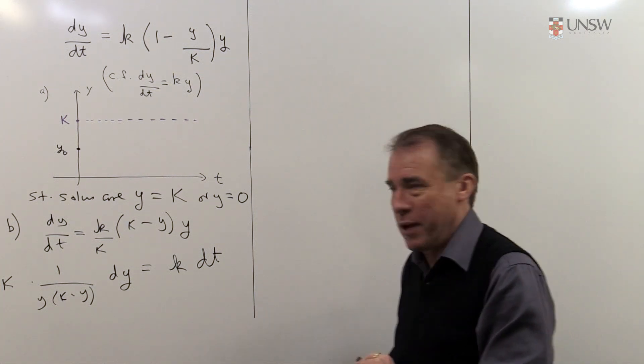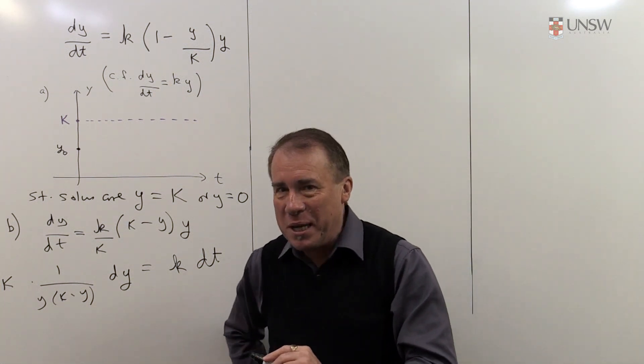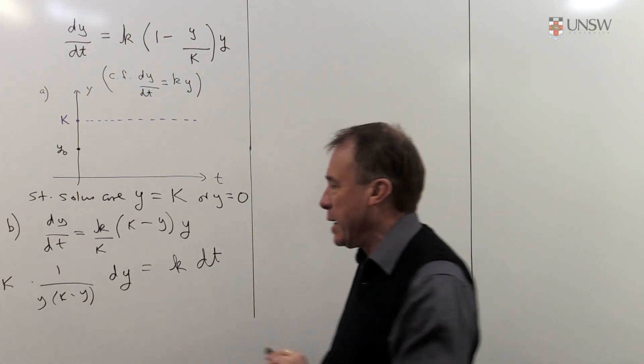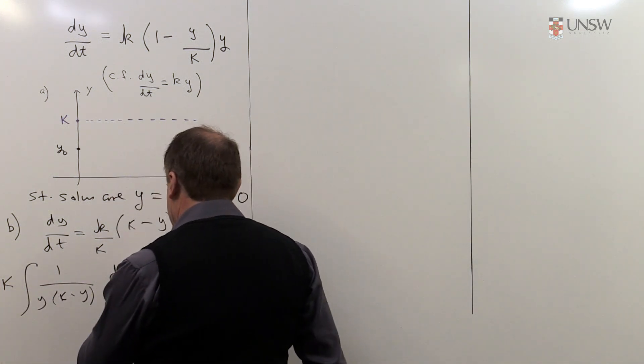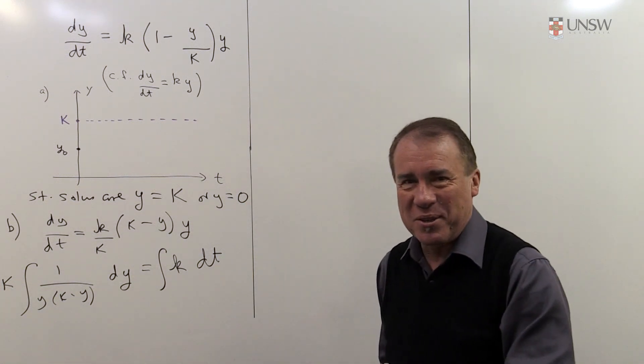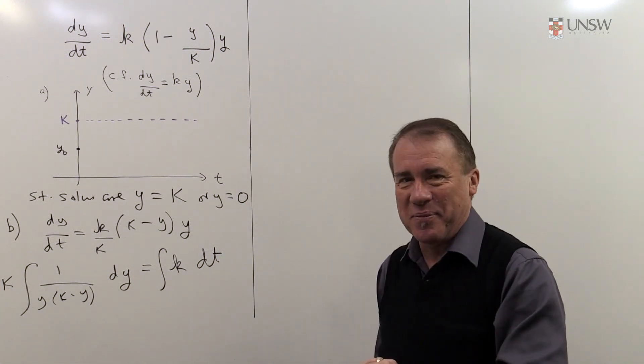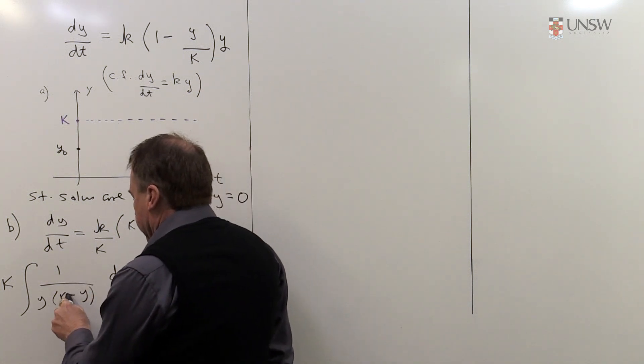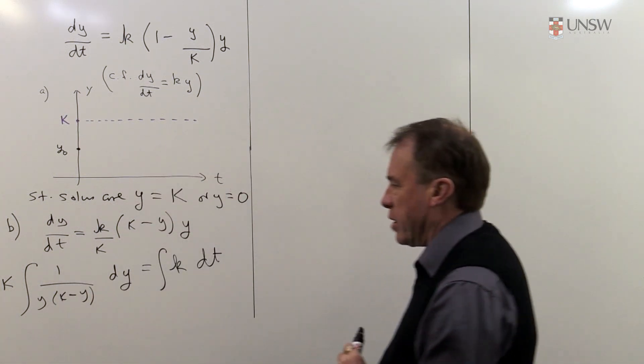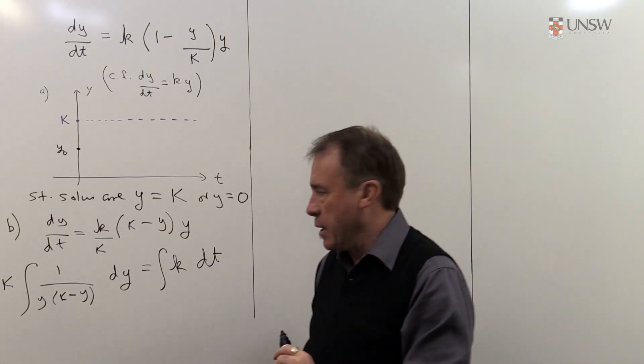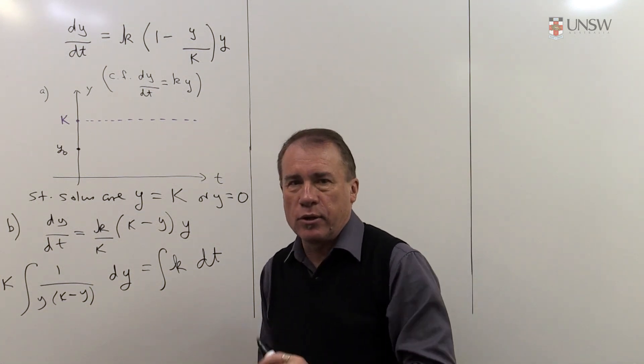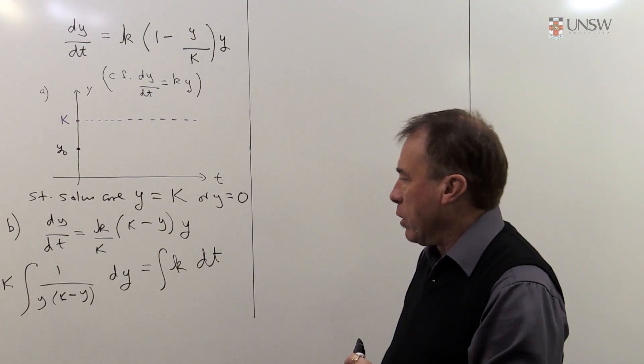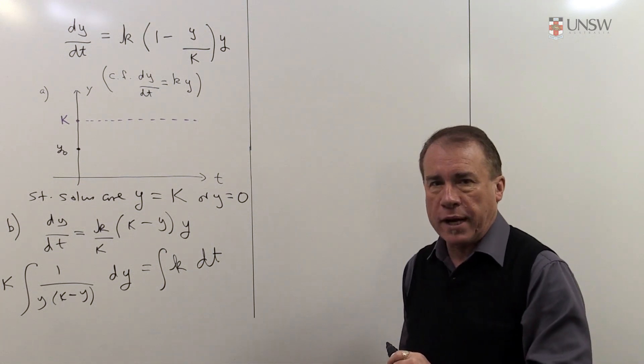Now, you were told at school you were never to break up the dy and the dt. We sort of do it symbolically. And then before anyone looks, we whack in an integral sign and now it makes sense. Now, on the left-hand side, you see we're going to need, this is not a standard integral as it is at the moment, so I'll probably need to do a little bit of massaging on that. Looks like it might be a partial fraction problem.